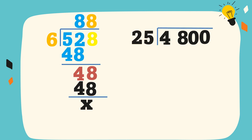Another example: 4,800 divided by 25. 4,800 is the dividend and 25 is the divisor. Let's divide. 4 divided by 25 cannot be, so we take 2 digits. 48 divided by 25 is equal to 1. We write 1 on top of 8. 1 times 25 is equal to 25.